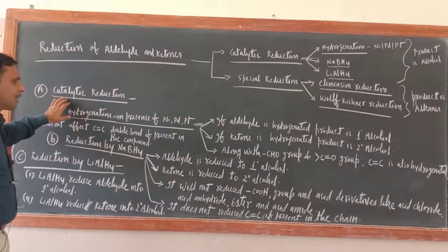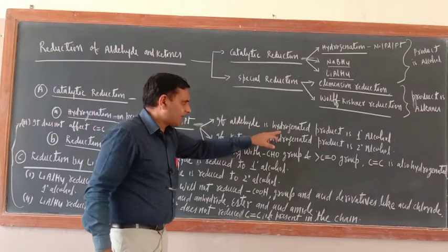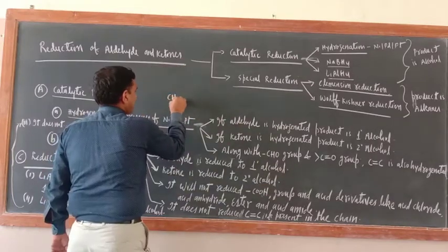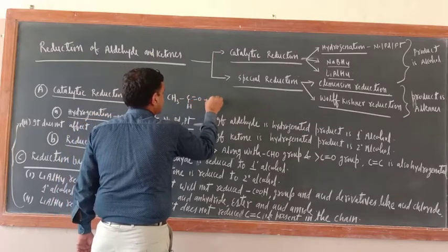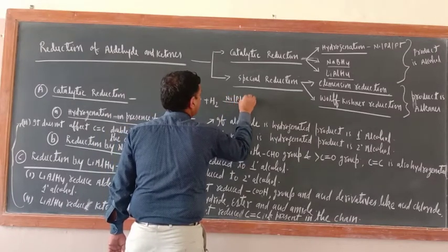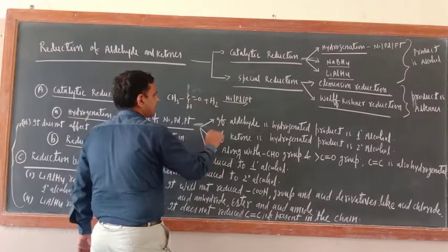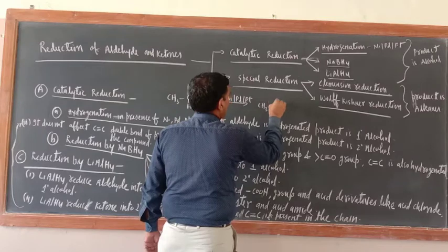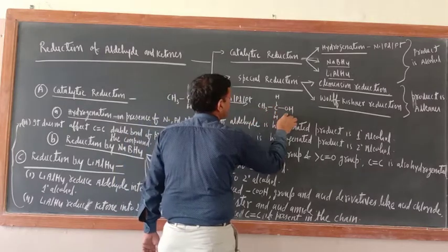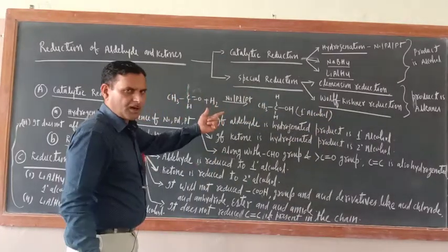For catalytic reduction by hydrogenation in presence of nickel, palladium, and platinum: if aldehyde CH₃CHO is hydrogenated, we add one H to the carbon and one H to the oxygen. The product is CH₃CH₂OH — that is primary alcohol. If ketone is hydrogenated with the same reducing agent, the product is secondary alcohol, specifically isopropyl alcohol.